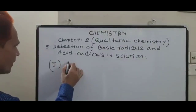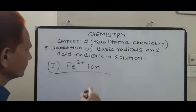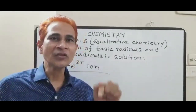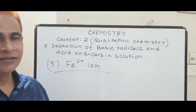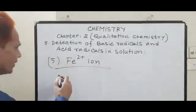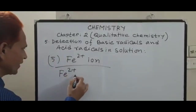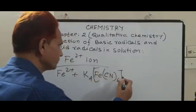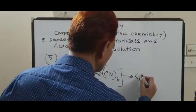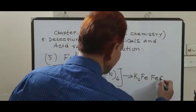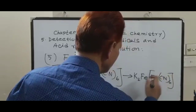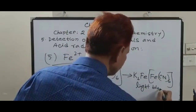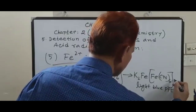Number five, ferrous ion. You take one to two millilitres of stock solution in a test tube and add potassium ferricyanide solution. Then you obtain a light blue precipitation. The reaction: ferrous ion plus potassium ferricyanide produces Turnbull's blue (K₂FeFe(CN)₆) plus potassium ion.